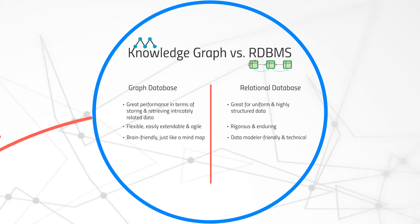Now onto the topic of data access and permissions. Since the nature of the data held in knowledge graphs is in the form of a network, building permission models for managing user access to different parts of a knowledge graph needs to be carefully planned out and executed. There are emerging practices on how to get it right, but being relatively new compared to RDBMS, there's continued effort to mature this space. With relational databases, there are well-established practices around data access and permissions, which trickle down from permission management at the database table level down to individual data record level if need be.